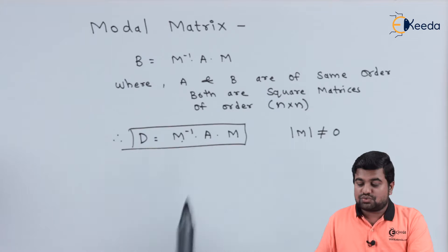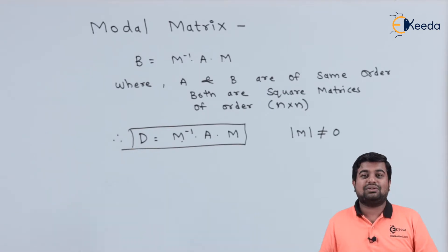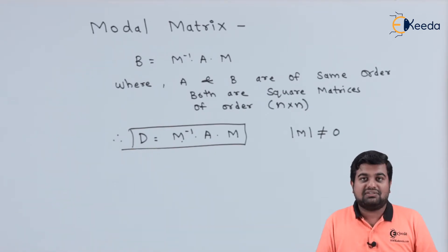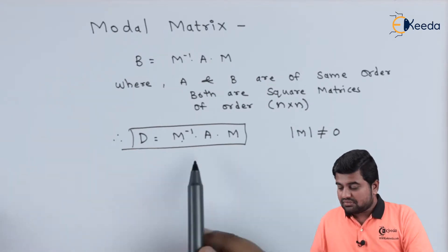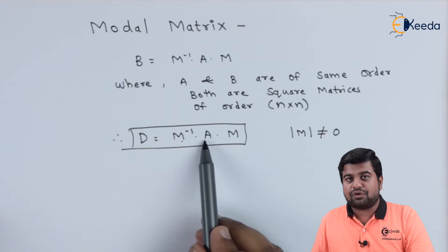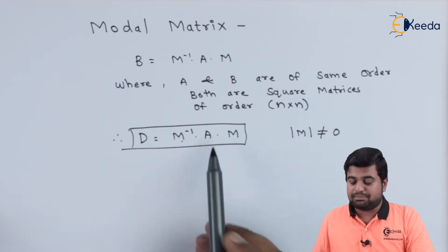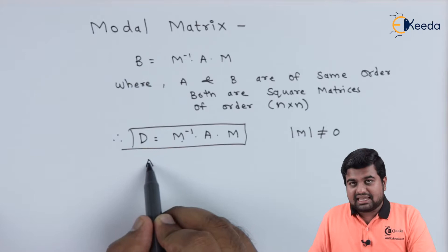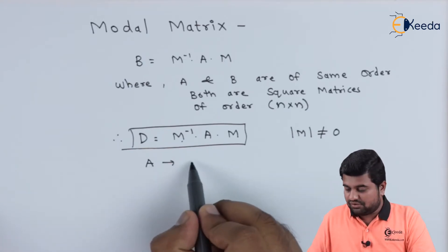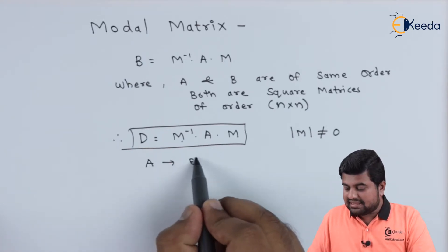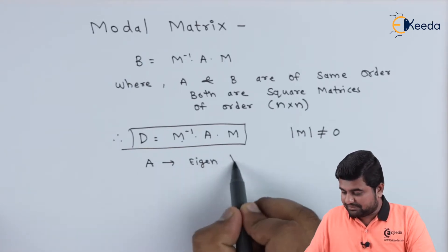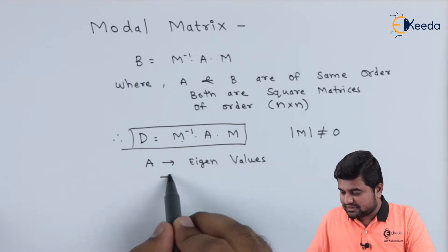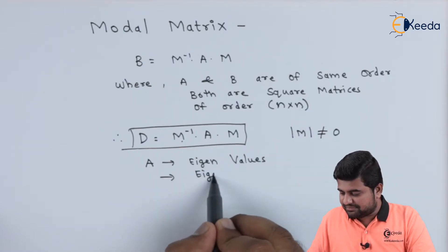So that was all about modal matrix and diagonalizing a given matrix. We need to find out what the modal matrix is. The procedure for finding the modal matrix is very simple: for a given matrix A, we find out the eigenvalues and eigenvectors.